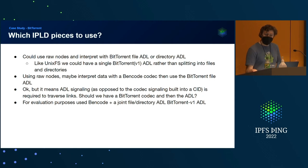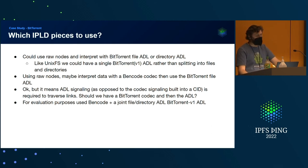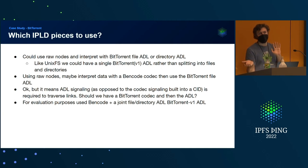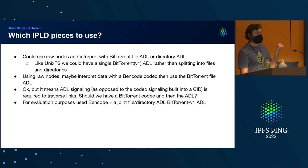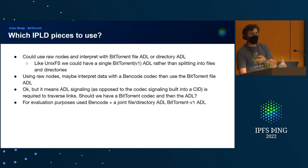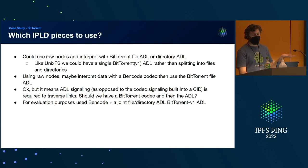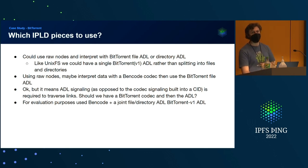Which IPLD pieces might be appropriate or useful? I could just use raw nodes — codecs are for chumps — and make a BitTorrent file or directory ADL, or a joint BitTorrent ADL like we have for UnixFS. This works because ADLs are just a more expressive version of codecs: codecs are bytes to data model, ADLs are data model to data model, but the data model includes bytes. So I could just save raw nodes and move on. Alternatively, I could have these nodes and then interpret them with a Bencode codec.